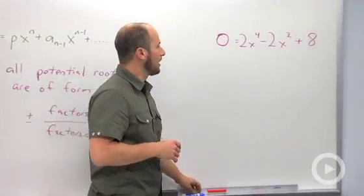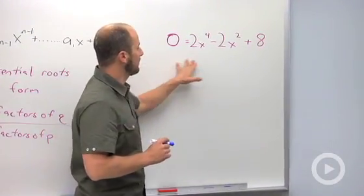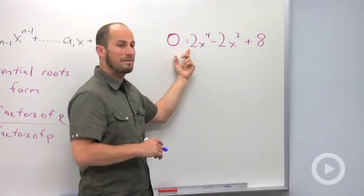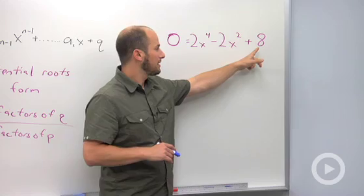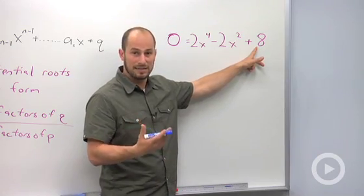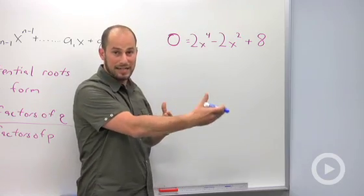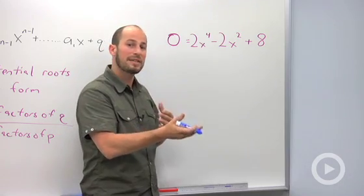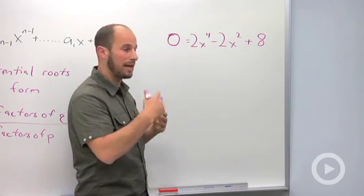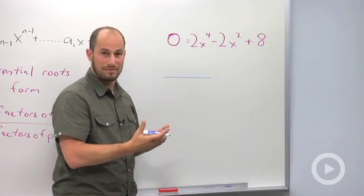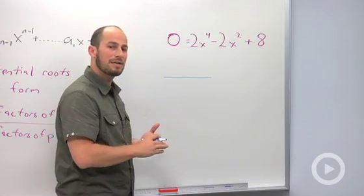Moving down, I have a polynomial here. It's a fourth degree, first coefficient is 2, last coefficient is 8. So what I'm looking for is the plus or minus factors of the last term over factors of the first term.